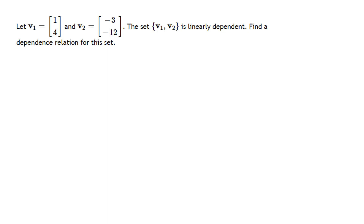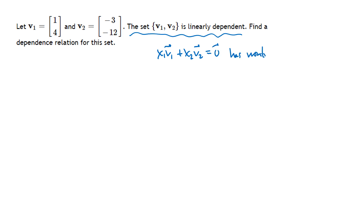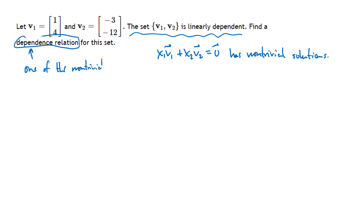Now let's look at another question. We're given a set of two vectors and told the set is linearly dependent. We need to find a dependence relation for this set. Linearly dependent means the vector equation x1·v1 + x2·v2 = 0 has non-trivial solutions — solutions other than just setting all x's to zero. A dependence relation is simply one of those non-trivial solutions.